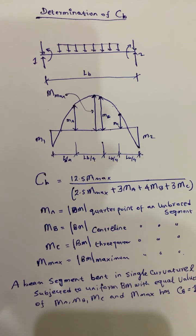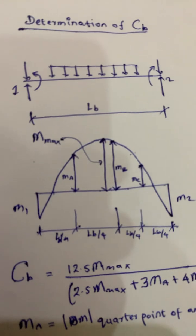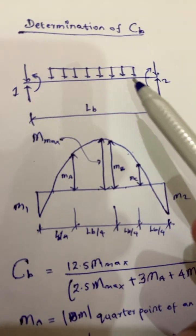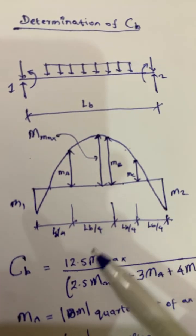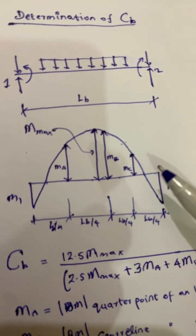Now let us talk about the determination of CB. Consider this is a beam segment with braces at point 1 and 2. This unbraced length is LB and it has the bending moment diagram like this.